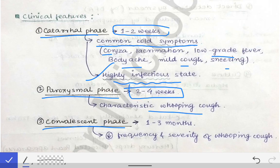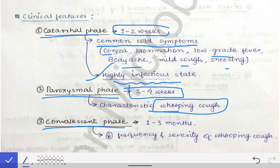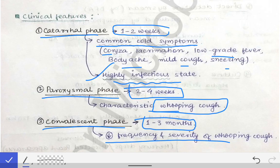The paroxysmal phase follows, lasting two to four weeks, and is characterized by the classic whooping cough. Next is the convalescent phase, which lasts the longest — one to three months. In the convalescent phase, the frequency and severity of the whooping cough gradually decrease.